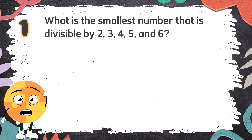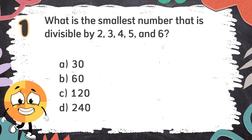Again, what is the smallest number that is divisible by 2, 3, 4, 5, and 6? The choices are: A. 30, B. 60, C. 120, D. 140.